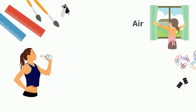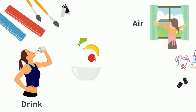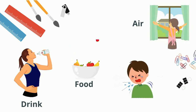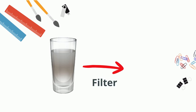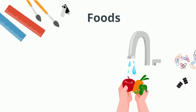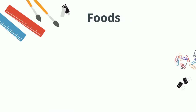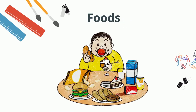Like air, we need pure water to drink and clean food to eat, or else we could fall ill. We can filter dirty water to make it pure, and we should wash our food such as fruits and vegetables before eating.